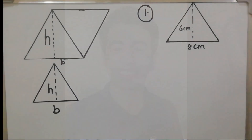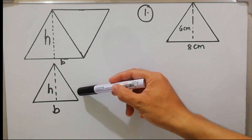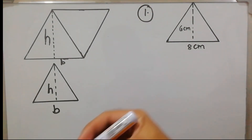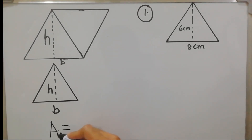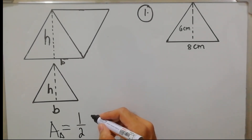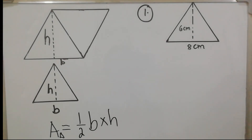Without further ado, let's start. The area of the triangle is derived from the area of the parallelogram. As you can see, if we cut this figure in half we will get this figure, so the area of the triangle is equal to one half of the area of the parallelogram, which is base times height, or bh.